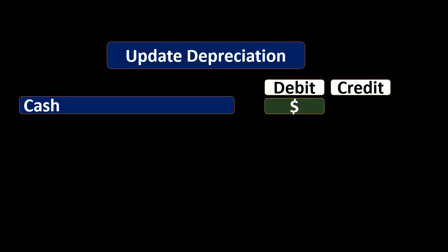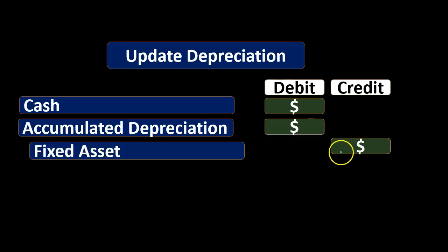Next we need to take the equipment off the books along with the accumulated depreciation. To do that we are going to credit the equipment. It's an asset, and the credit to equipment should be something we can reason through pretty easily. If we have a trial balance in front of us, it's easy to see this is a debit balance account and we need to take it off the books with a credit. The accumulated depreciation is a contra asset account related to the fixed asset, so it can't be left on the books. We need to debit the accumulated depreciation — it has a credit balance, so we do the opposite and debit it.